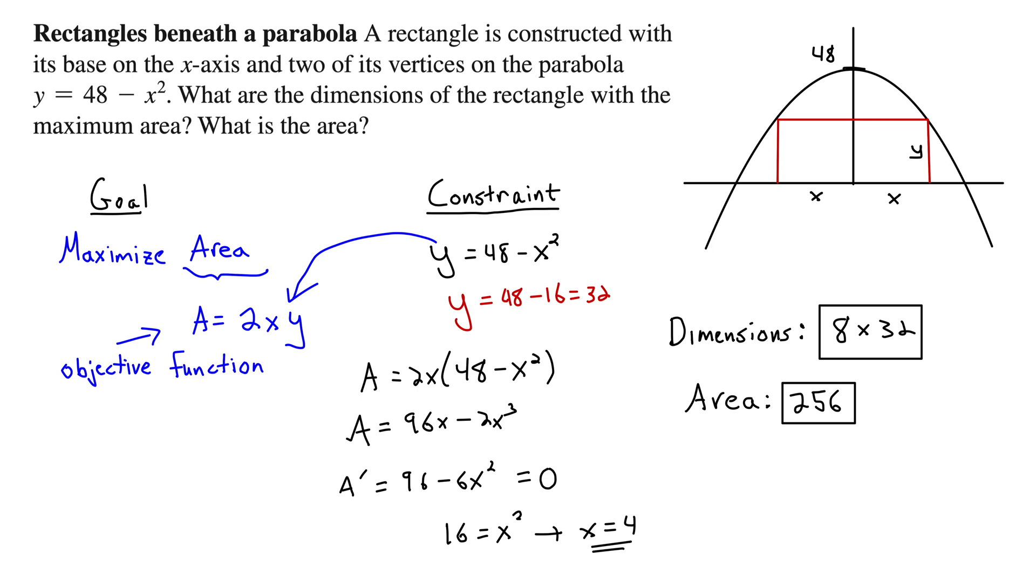Finally, you could always take the second derivative and note that that's going to be negative any time x is positive. Since we're only dealing with positive x's it's going to be concave down which means any point of interest is going to be a maximum. That's the second derivative test.